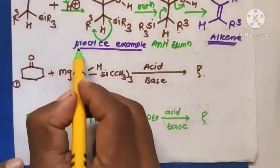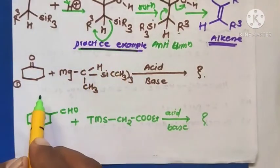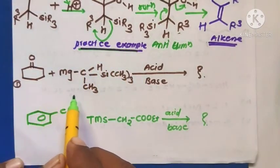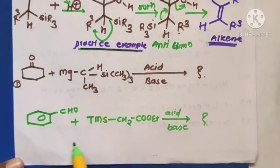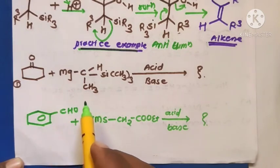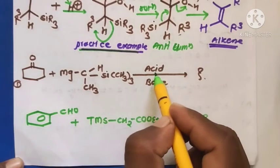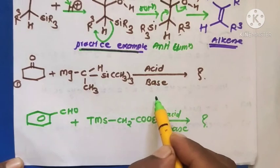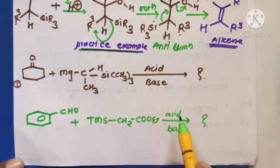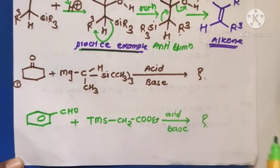These are two practice examples. You can write the mechanism and determine the correct product of these reactions by using both catalysts — that is, acid as well as base — to form the products of these reactions.